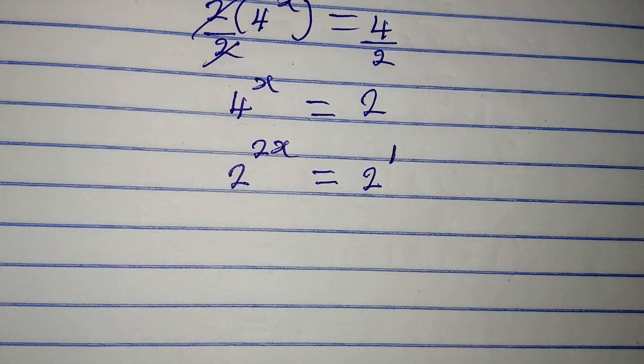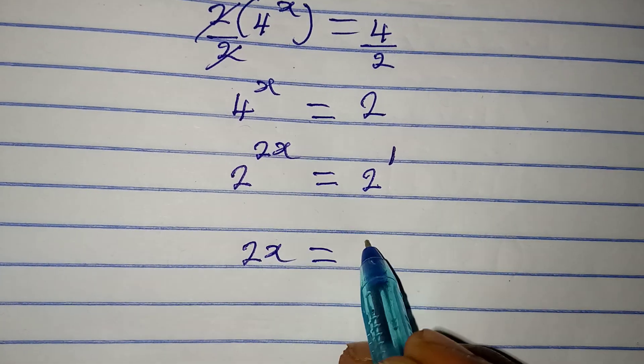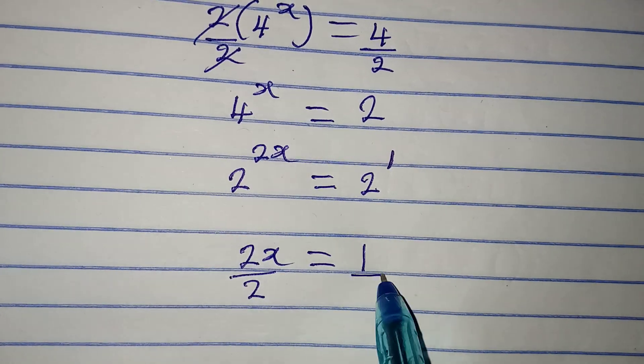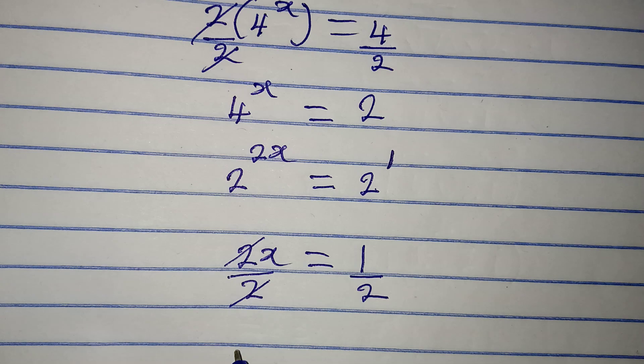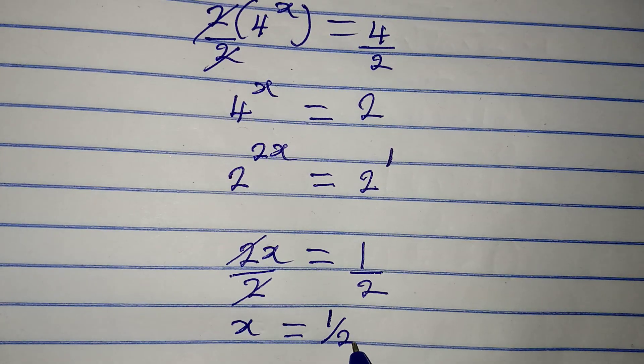Now the bases are the same, we will work with the powers. 2x will be equal to 1, then divide this by 2, divide this by 2. Two cancels two, and then x is equal to 1 over 2.